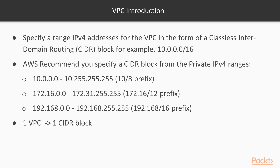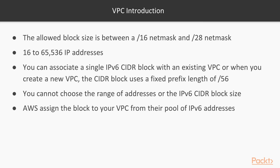There is a one-to-one mapping between VPCs and CIDR blocks — when you create your VPC you specify the CIDR block you want to use. The allowed block size is between a slash 16 and a slash 28 net mask, meaning 16 to 65,536 IP addresses. You can also associate a single IPv6 CIDR block with a VPC — VPCs are fully IPv6 compliant. The IPv6 CIDR block uses a fixed prefix length of slash 56, but you can't choose the range; AWS assigns the block from their pool of IPv6 addresses. Most common use cases currently will use an IPv4 address range.